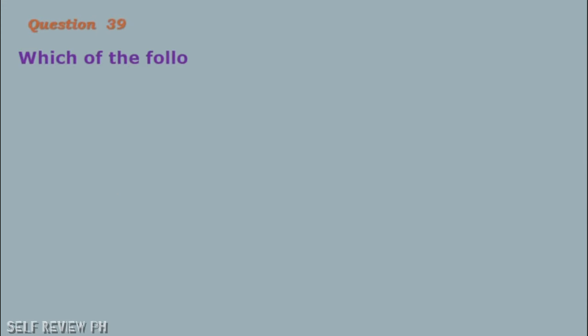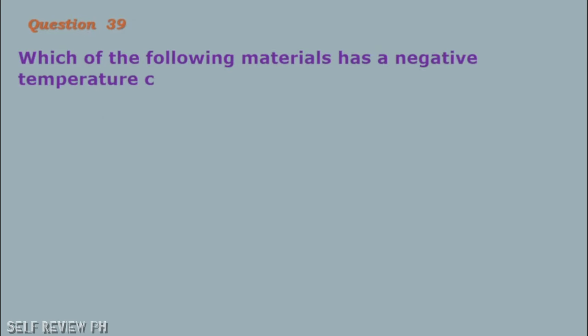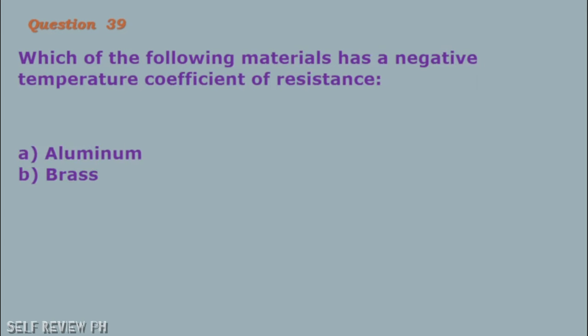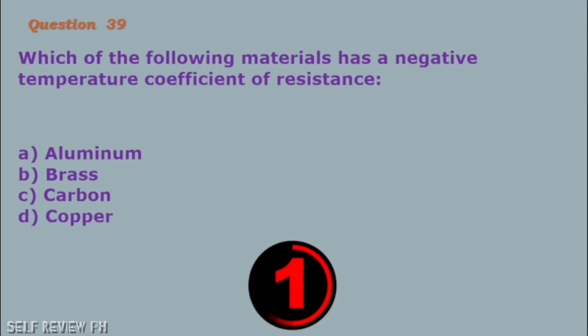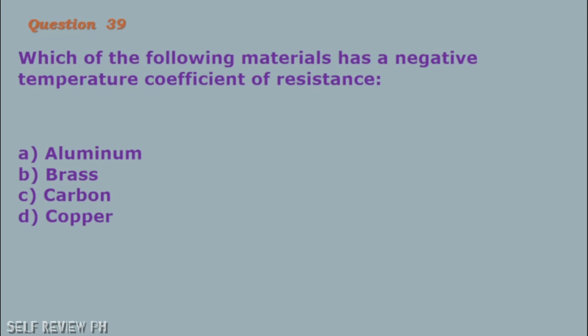Question number 39: Which of the following materials has a negative temperature coefficient of resistance? A. Aluminum B. Brass C. Carbon D. Copper. The correct answer is letter C, carbon.